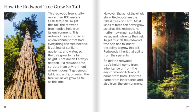Redwoods are the tallest trees on Earth. Most kinds of trees can never grow as tall as a redwood, no matter how much sunlight, water, and nutrients they get. To get this tall, the redwood tree also had to inherit the ability to grow this tall — redwoods inherit that ability from their parents. So did the redwood tree's height come from inheritance or from the environment? Actually, it came from both. This trait came from inheritance and also from the environment.